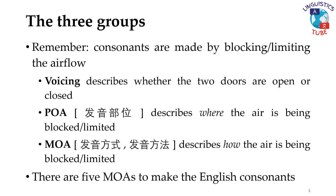We've previously learned that consonants are made by blocking, or at least limiting, the flow of air as it travels from the throat and exits the mouth. Voicing describes whether the two doors in the throat are completely open or mostly closed — open creates voiceless sounds, whereas mostly closed creates voiced sounds. The place of articulation describes where the air is being blocked or limited in the mouth. The manner of articulation describes how the air is being blocked or limited.